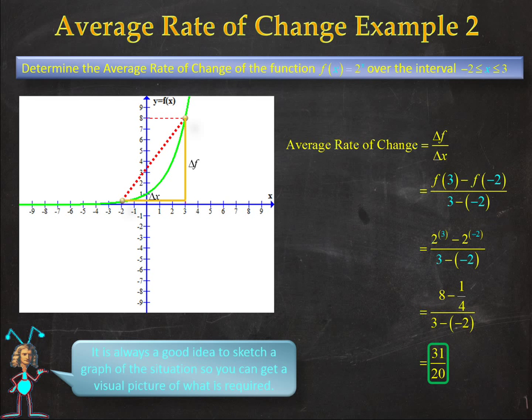So that is the average rate of change of our function over this interval, and it's also equal to the slope of that secant line between those two points.